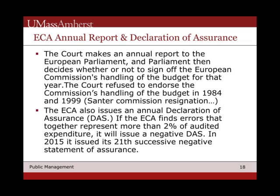What comes out of this process is basically a declaration of assurance — are they finding errors in these audited expenditures? If they find errors, you get a negative declaration of assurance, meaning there's no way to be comfortable that this is a reliable financial process. In 2015, it was the EU's 21st consecutive negative statement of assurance — there's basically never been a positive DAS for the European budget. There have been certain years where the Court actually refused to endorse the handling of the budget: first in 1984, then in 1999, which led to the Santer Commission resignation — the event that set off the case from the previous week.